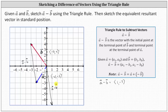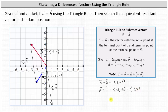To check our work, because we have vectors a and b in component form, to find the difference of the two vectors we subtract the x components and the y components. Vector a has an x component of negative two and a y component of negative three, and vector b has an x component of negative three and a y component of four. Subtracting the x components gives us negative two minus negative three, and subtracting the y components gives us negative three minus four. Simplifying, we do have the resultant vector where the x component is positive one and the y component is negative seven.